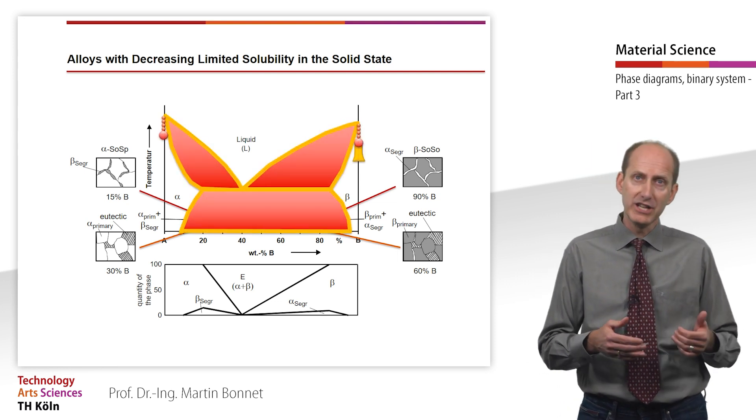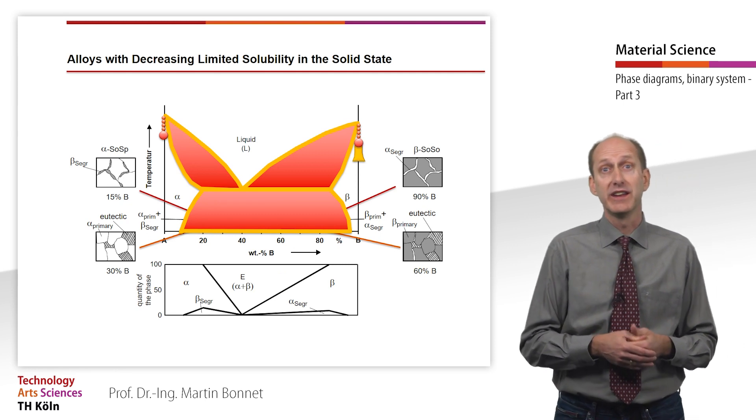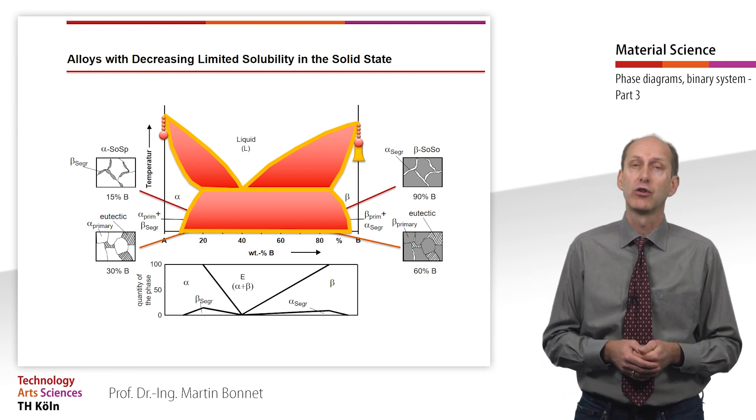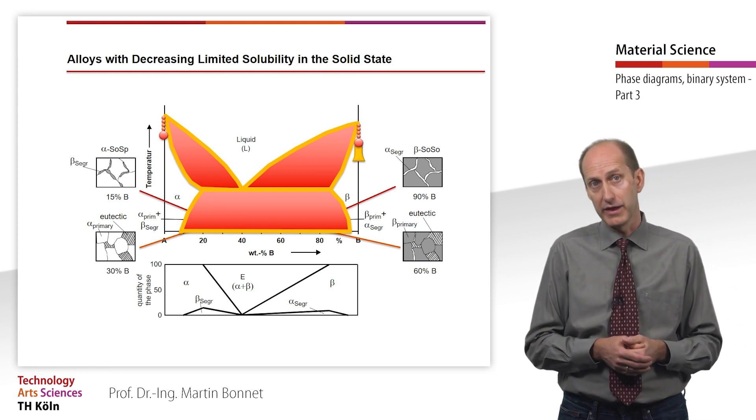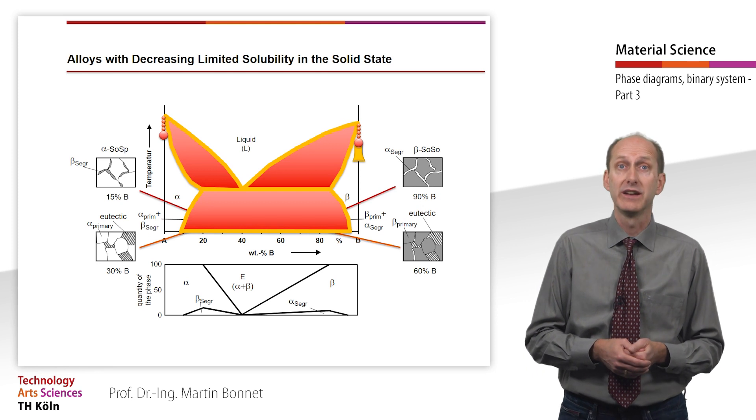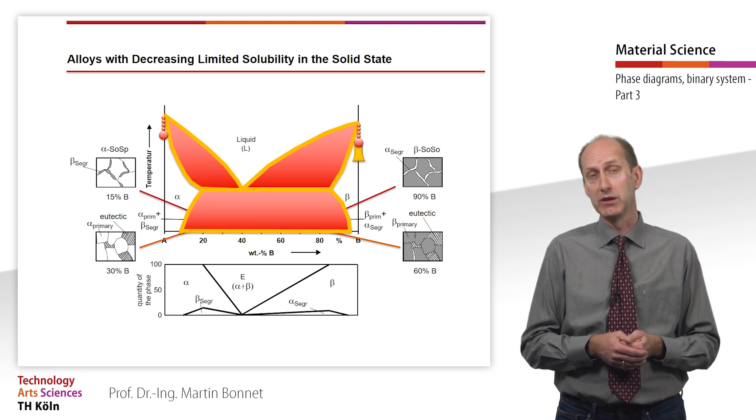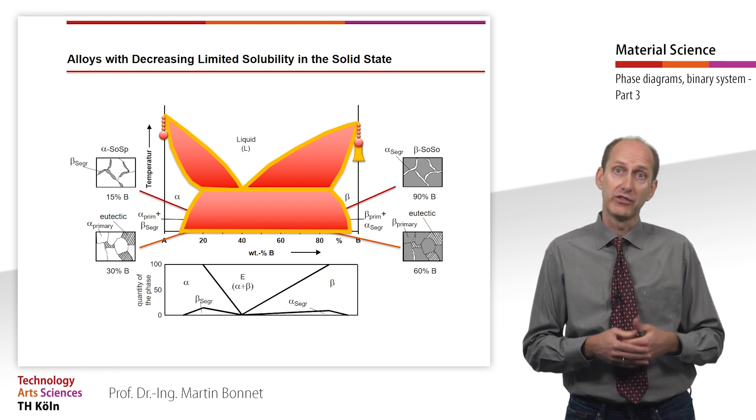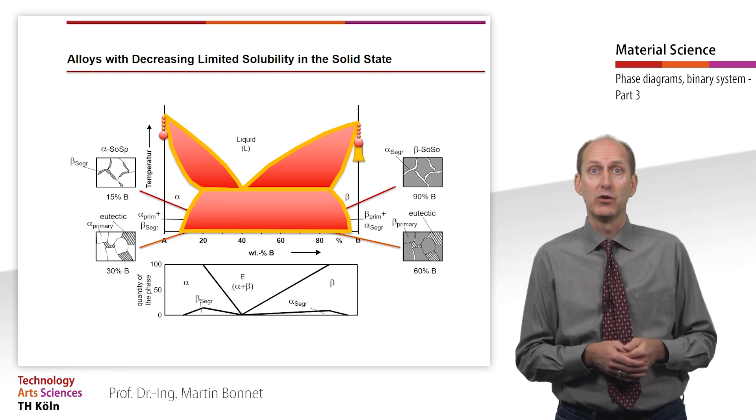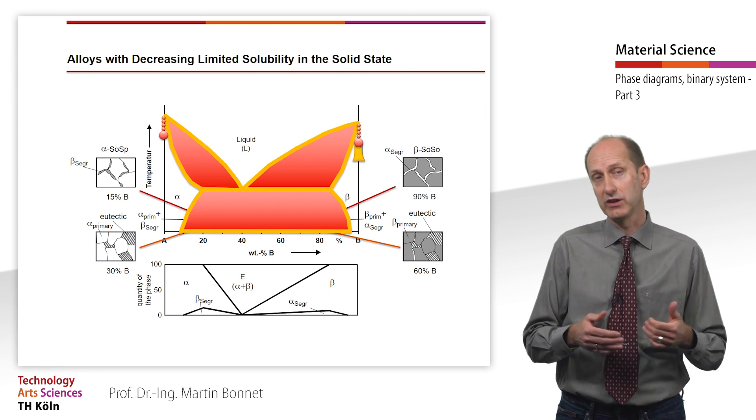The exchange processes that are necessary for the formation of segregates in the solid state occur very slowly. Therefore, segregates generally precipitate out at energetically favourable places, which, beside grain boundaries, can be accumulations of voids or dislocations or other lattice defects.